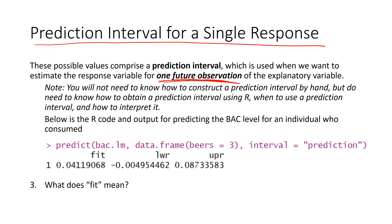Using R, we can use the predict function. BACLM is just the name I used for my linear model. The data frame was for my variable beers equaling three. I added another argument — interval equals, inside double quotes, 'prediction.' So what I'm getting in this R output is a prediction interval — again, for one single response. In the output, we get a fit, a lower bound, and an upper bound.